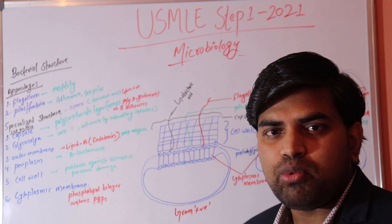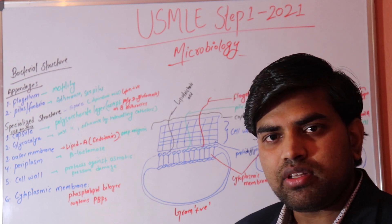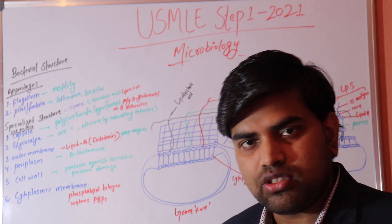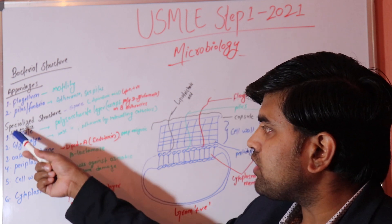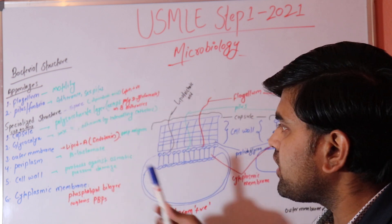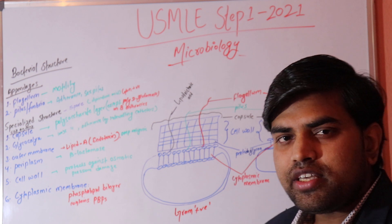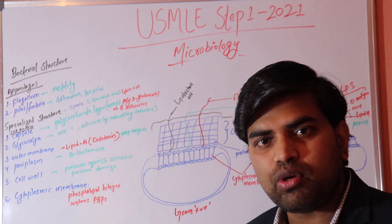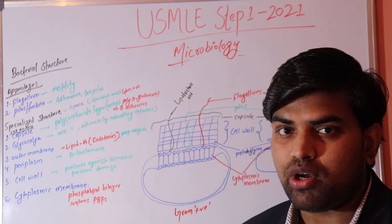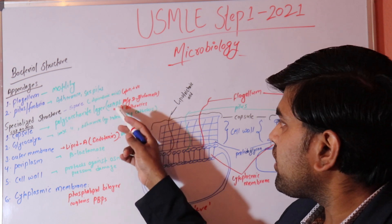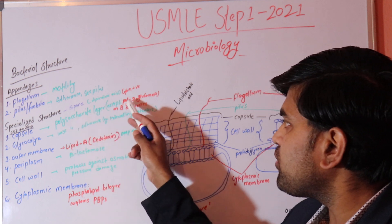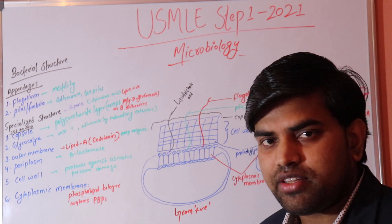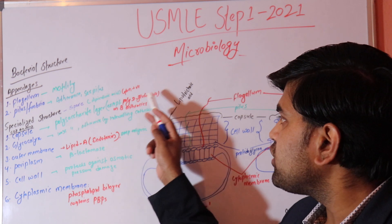Another important structure is the capsule, which is made of a polysaccharide layer in virtually all bacteria — with one important exception: Bacillus anthracis, whose capsule is made of poly-D-glutamate instead of polysaccharide. This is a key fact to remember, as it is likely to appear as an exam question.